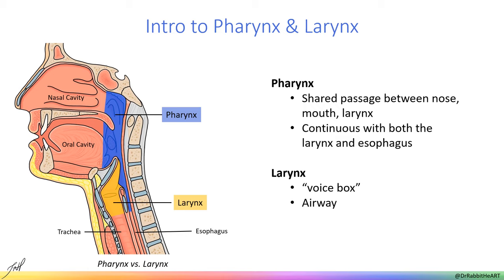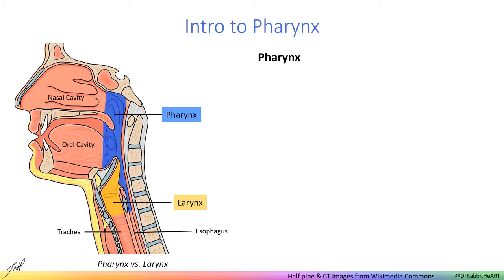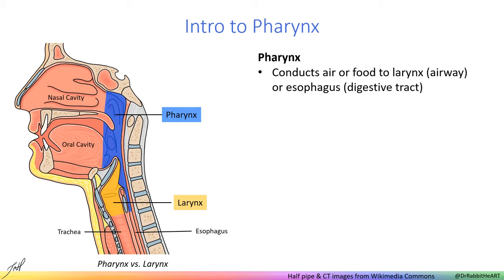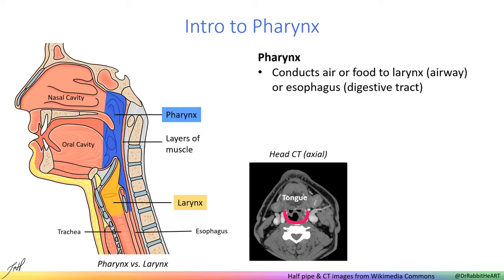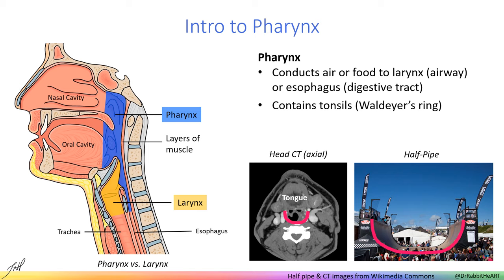We will begin by talking about the pharynx. The pharynx functions to conduct food, liquids, and air from the nasal or oral cavities to the digestive or respiratory tract. It is open anteriorly to the nasal cavity, oral cavity, and larynx but closed posteriorly by layers of muscle. Therefore, the pharynx is shaped somewhat like a half pipe. The pharynx also contains a ring of tonsillar or lymphatic tissue called Waldeyer's ring around the openings from the nasal and oral cavities as protection from pathogens. The pharynx is also connected to the middle ear via the auditory or pharyngotympanic tube.